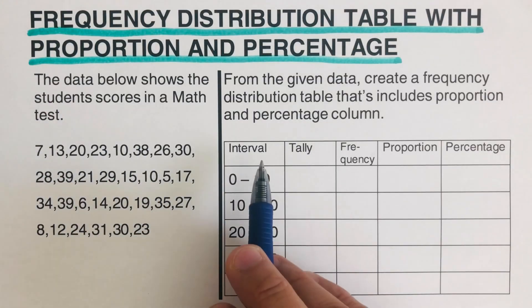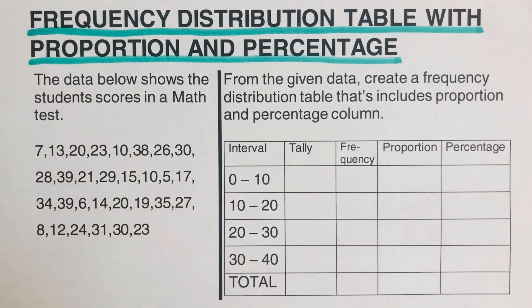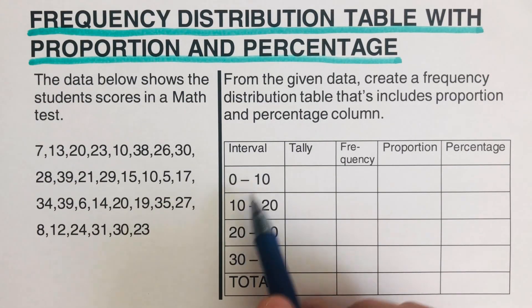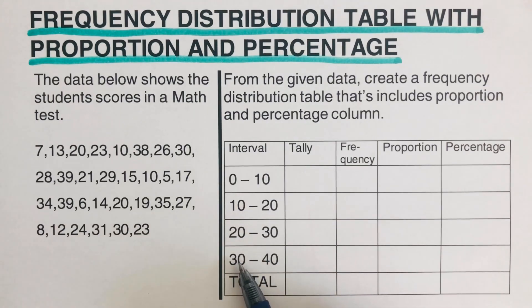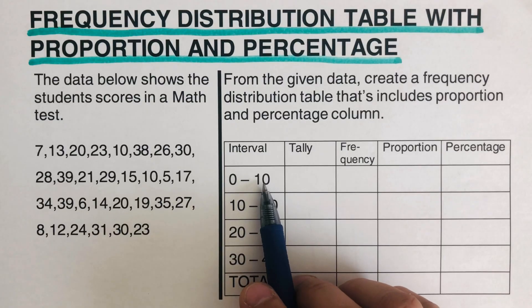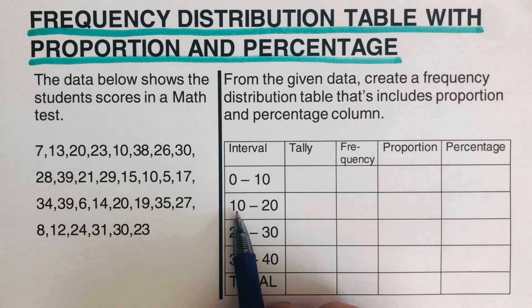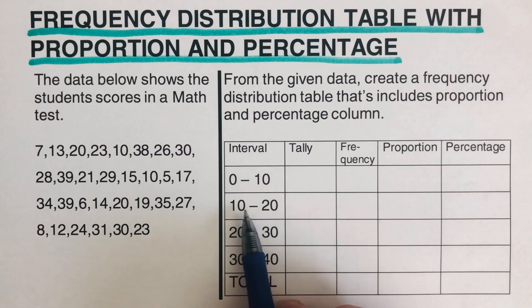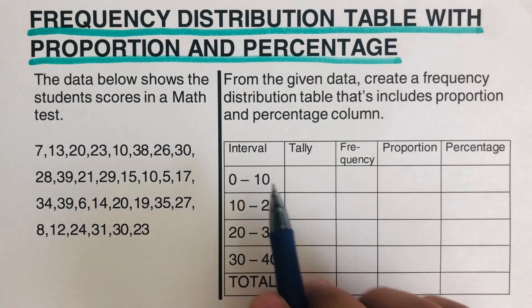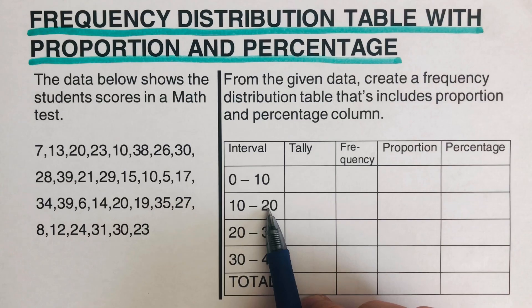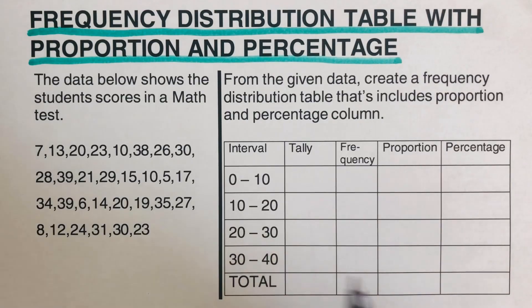Before we jump into this example, let's look at the intervals in the first column of this table. You may notice we have two 10s, two 20s, and two 30s. Please remember: the first 10 is not included — it is actually 9.99999, almost 10. The second 10 is included. Similarly, the 20 on the right side of the first interval is actually 19.99999, and the 30 is actually 29.99999. These numbers on the right side are not included; the numbers on the left side of each interval are the ones that are included.